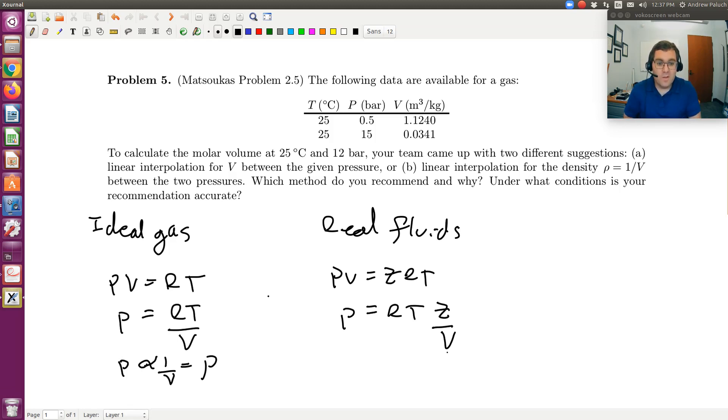Right? It's still going to be that P is going to scale with respect to one over V, or it's just more so that Z over V is going to scale better, so P is going to scale better with one over V than it would directly with V. So your interpolating with respect to density would be exact for the case of an ideal gas.